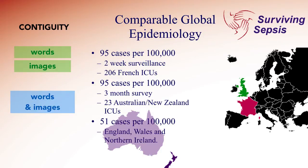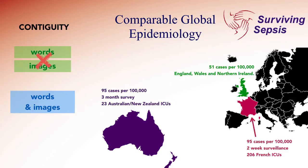The contiguity principle says that people learn better when words and images are next to each other rather than separated. They can be separated in either time or in space. So let's take this slide — the words are off to the side — and move them close to the countries that they're referring to. Now you can see the words are next to the countries that they're describing.